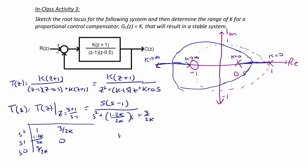So 1 minus 2k over 2k must be greater than 0 yields k is less than 1.5. Our other constraint is 3 over 2k must be greater than 0, and that yields that k must be greater than 0, which we know because k must always be greater than 0.